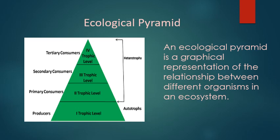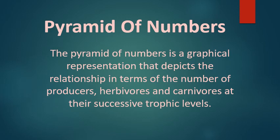Various trophic levels in an ecosystem and energy flow from one level to another can also be depicted graphically, and these graphic representations are called ecological pyramids. An ecological pyramid can be defined as a graphical representation of the relationship between different organisms in an ecosystem. Each of the bars that make up the pyramid represents a different trophic level and their order represents the flow of energy. There are three basic types of ecological pyramids: pyramids of numbers, biomass, and energy. Today we are going to discuss the different types of pyramids of numbers.